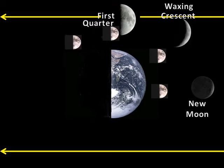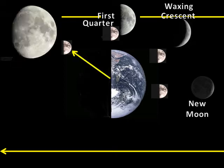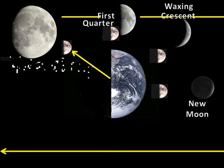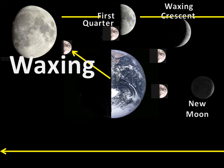The moon marches on until it reaches this point. Here we can see more than half of the lit side of the moon, and this surface appears to be growing from night to night. We say that this phase is waxing, just like the waxing crescent.